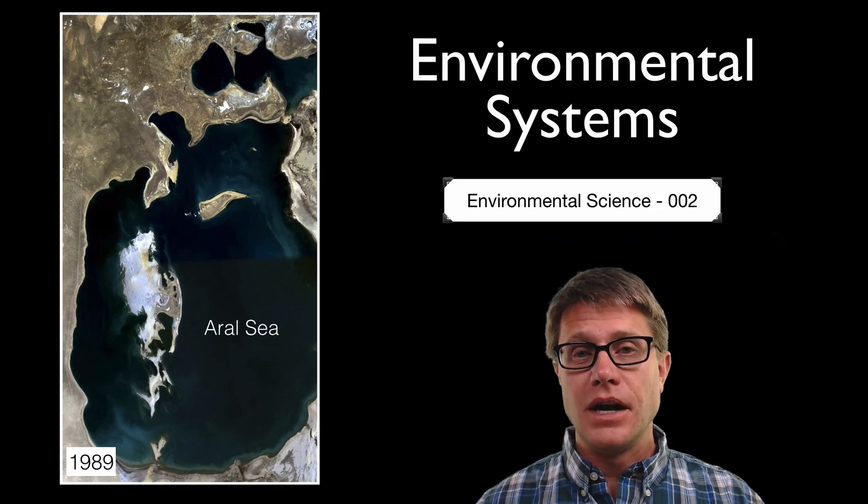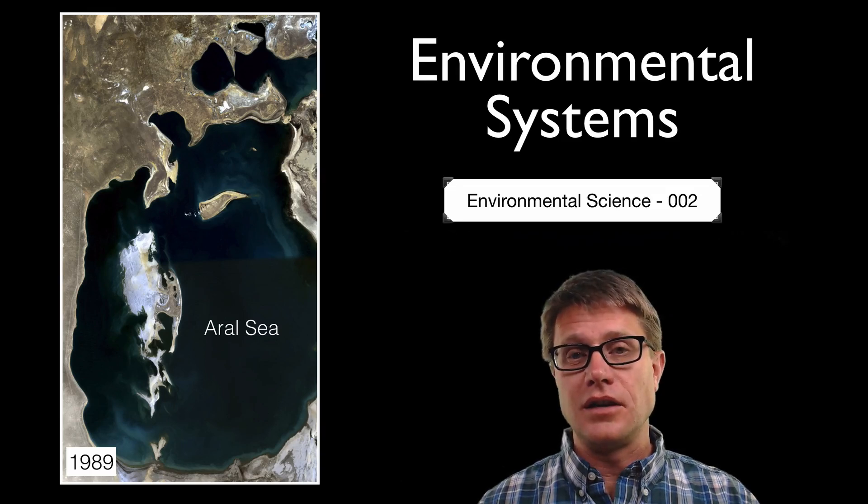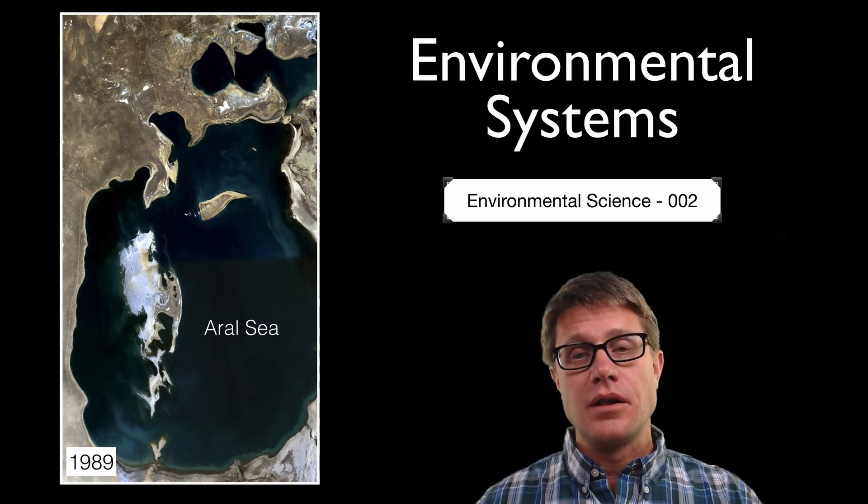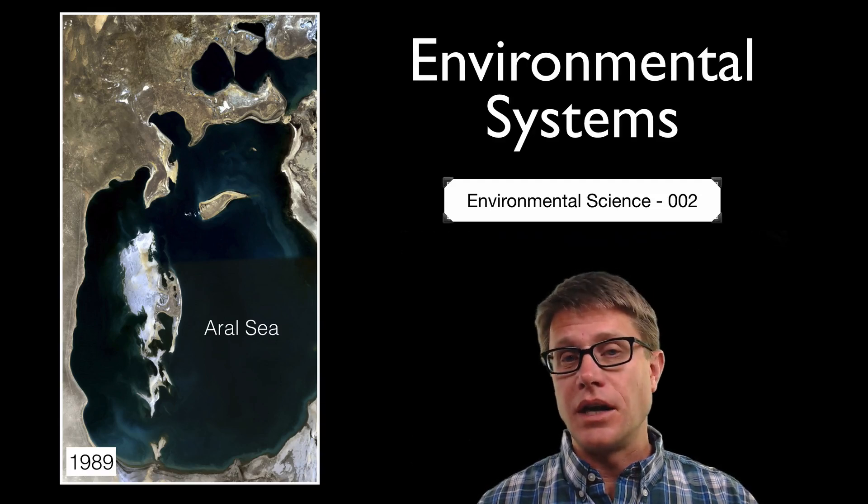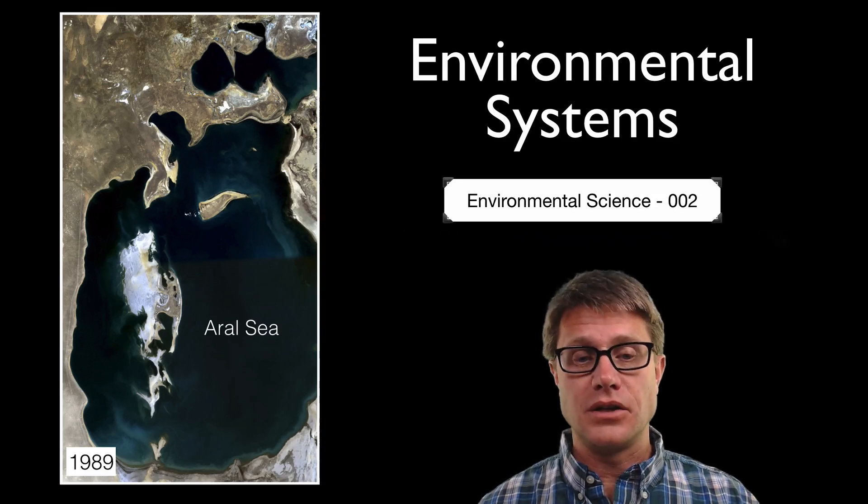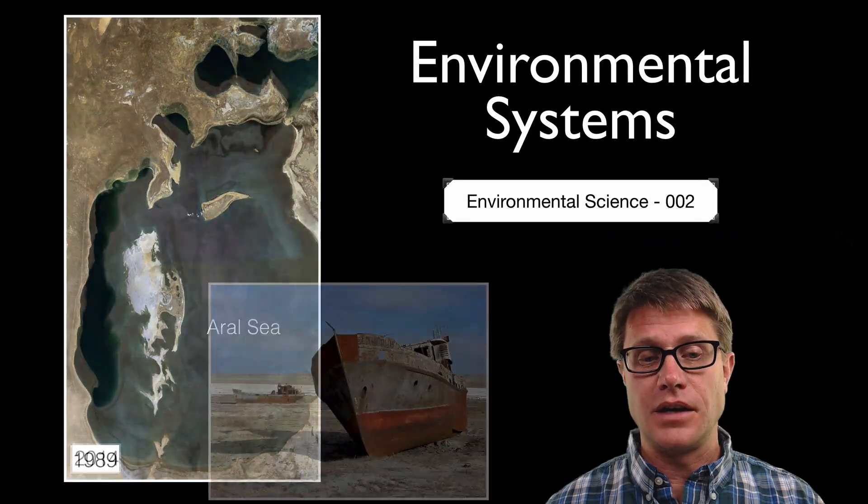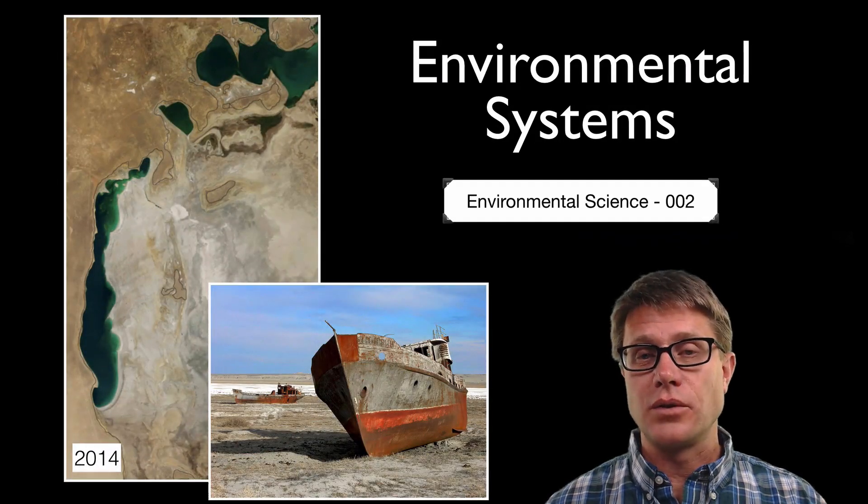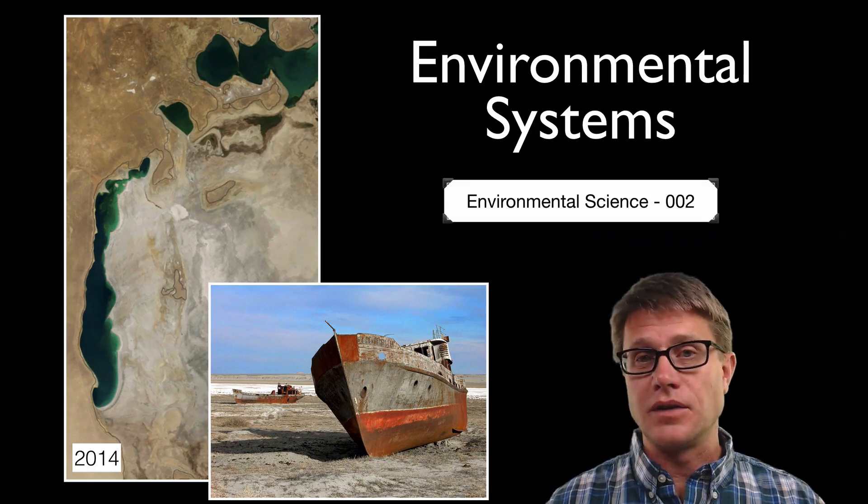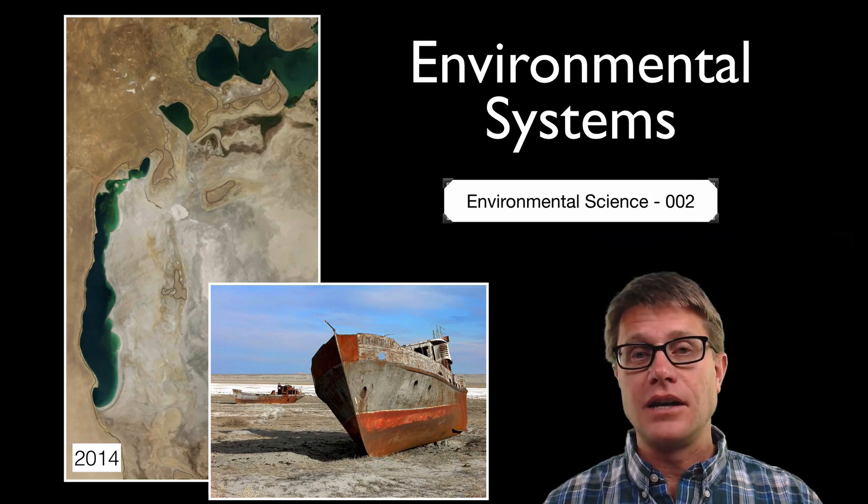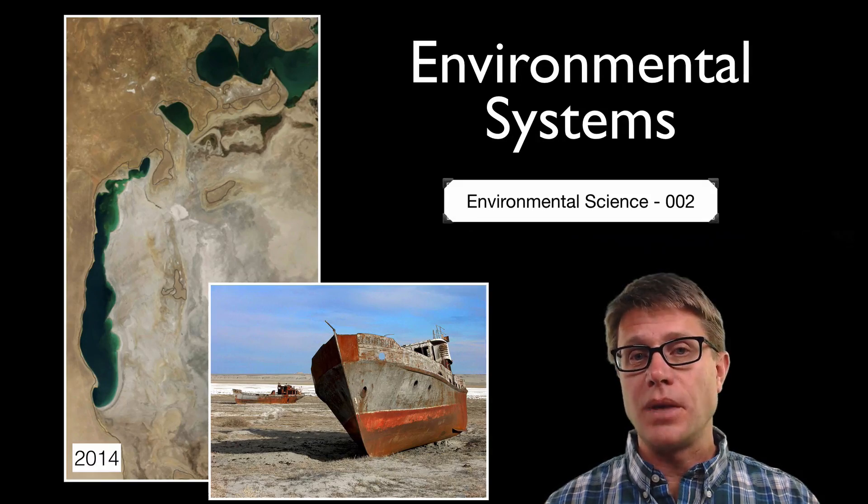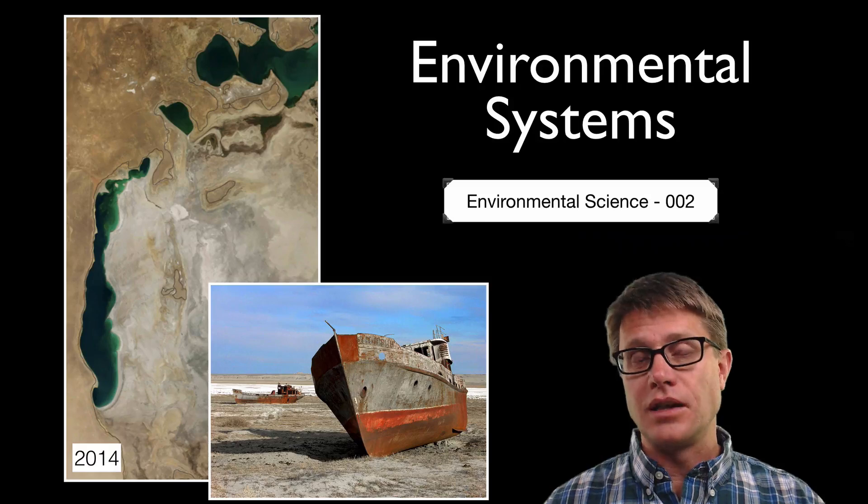A good example would be the Aral Sea. It sits on the border of Kazakhstan and Uzbekistan. It used to be the fourth largest lake on the planet. The Soviet Union was irrigating off the Aral Sea to grow cotton and rice. It was not super efficient irrigation. If you watch what happened from 1989 until 2014 it essentially became a desert. The fish all died, the fishing died, and we had economic collapse. This was a problem with the system. We were not managing the inputs and the outputs.